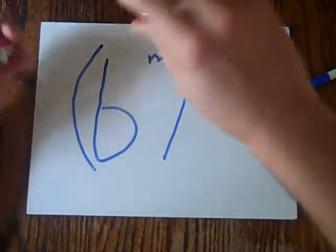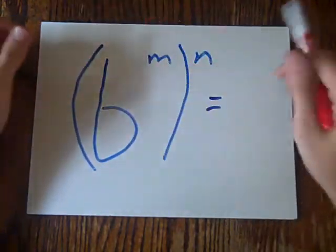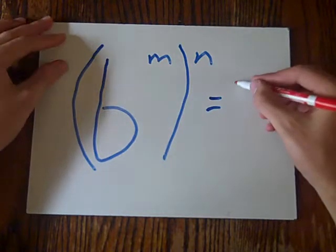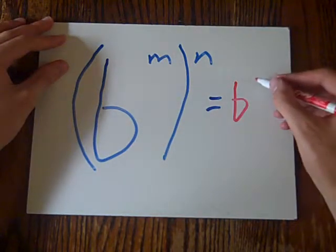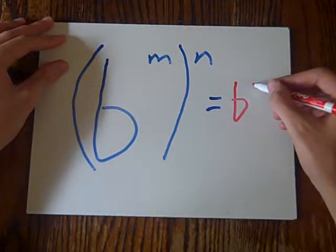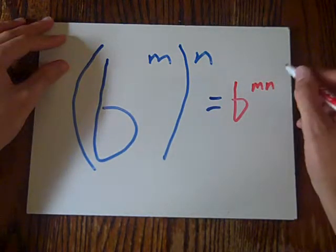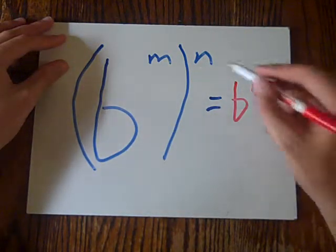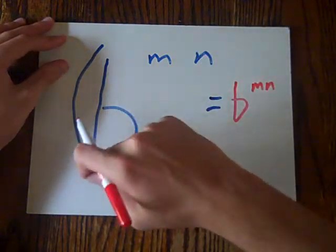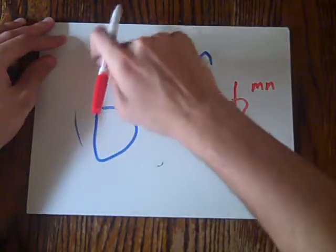It equals b to the m n. So basically, they're multiplied together. That's what happens. You just take it off and voila.